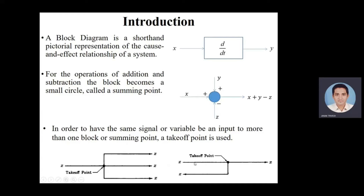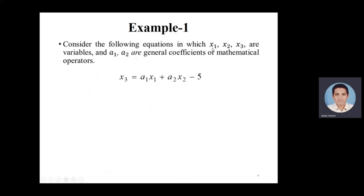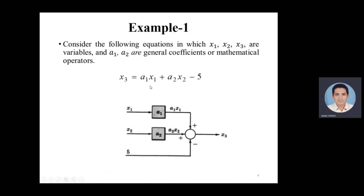This is the second case where a takeoff point is used to give the same variable x as output and for feedback. Now consider the following example equation where x1, x2, x3 are variables and a1, a2 are general coefficients. Then x3 equals a1*x1 plus a2*x2 minus 5. This can be represented simply: a1 and x1, a2 and x2 are both positive inputs, and 5 is a constant with a minus sign, all meeting at a summing point to give x3.